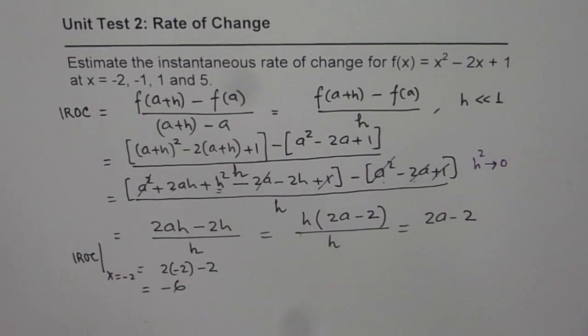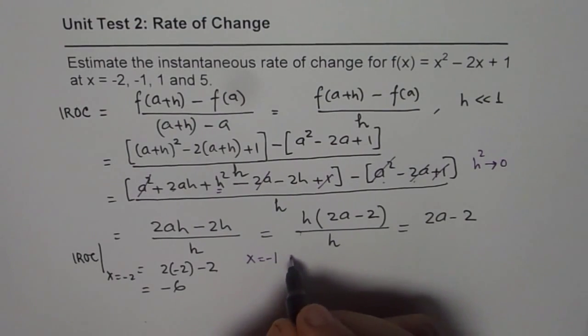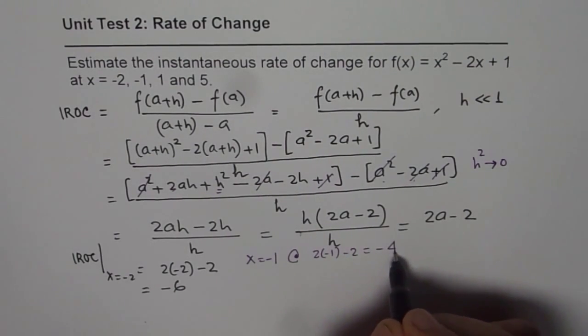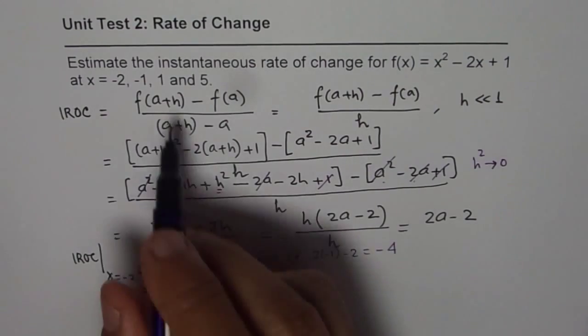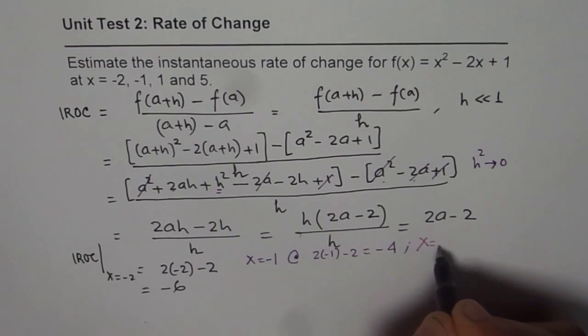Similarly, at x equals minus 1, it is going to be 2 times minus 1 minus 2, which is minus 4. At x equals 1, it will be 2 times 1 minus 2, which equals 0.